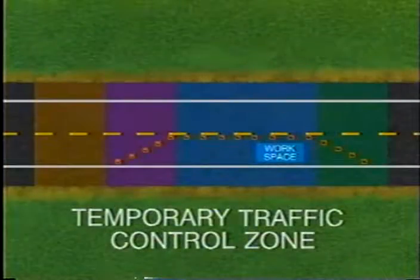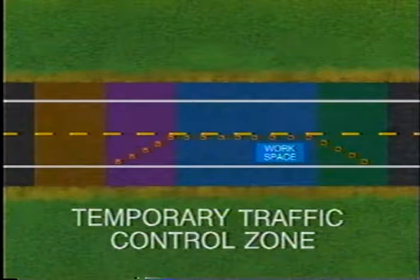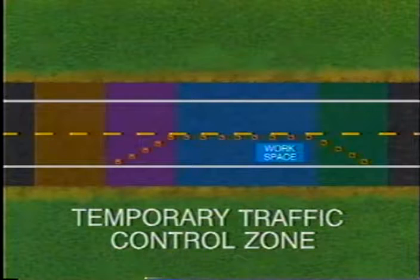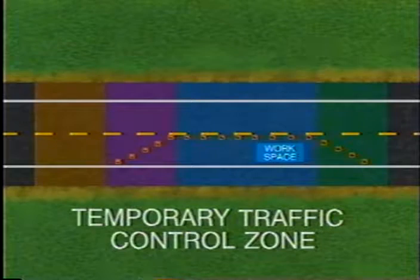Most temporary traffic control zones can be divided into four areas. In this part of the training, we'll look at each of the areas and examine them for one direction of travel. If the work you'll be doing affects more than one direction of travel, the same principles we cover here will apply to traffic in all directions. These are the four areas of temporary traffic control zones we'll be discussing. Accidents can occur in all of these areas if they are not properly controlled.